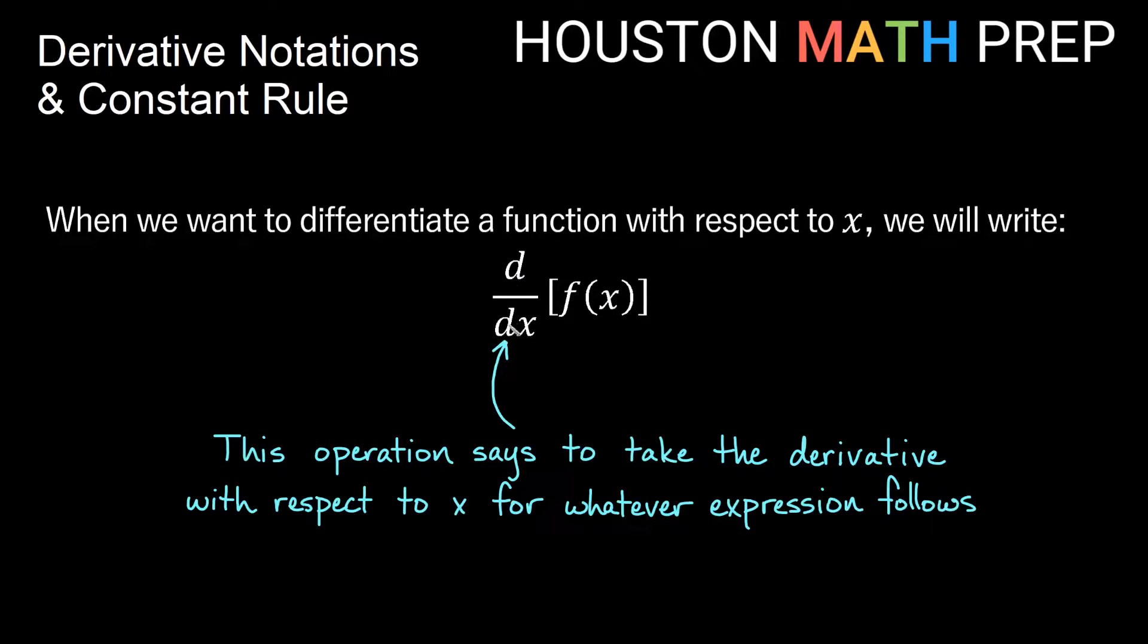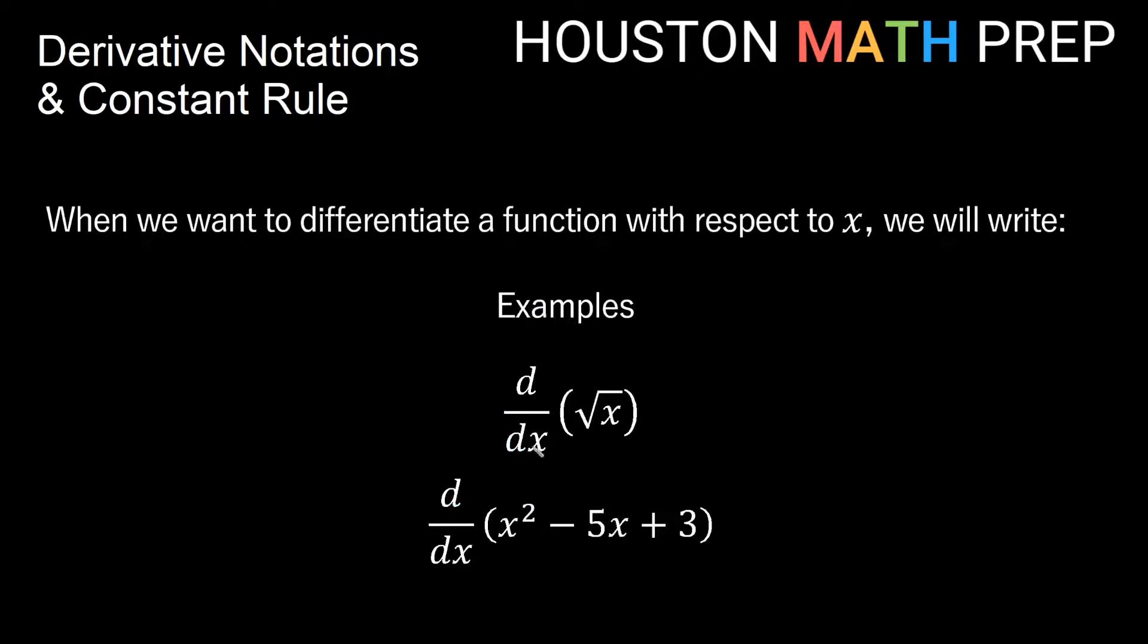This is saying the derivative with respect to x of the function f of x. Okay, and the derivative with respect to x just simply means take the derivative of the function treating x as the variable. Some examples of things that would look like this: here this expression says the derivative with respect to x of square root x, and this one says the derivative with respect to x of x squared minus 5x plus 3.